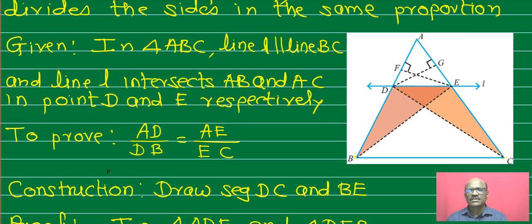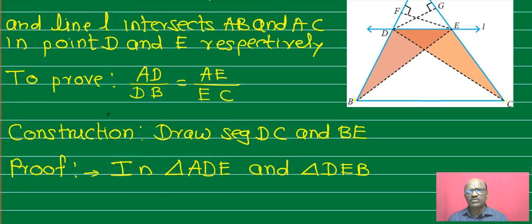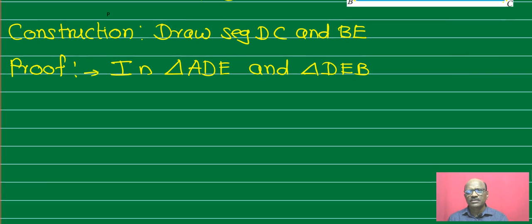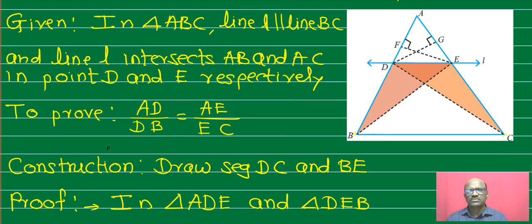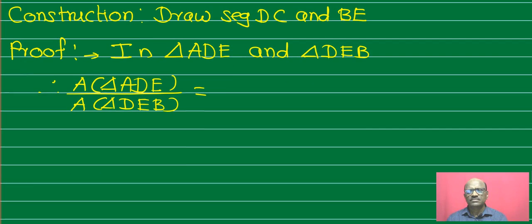Consider triangles ADE and DAB. These two triangles have the same vertex and EF is perpendicular to AB. Therefore their heights are the same. That is, area of triangle ADE upon area of triangle DAB equals ADE upon DB. This is the first expression.